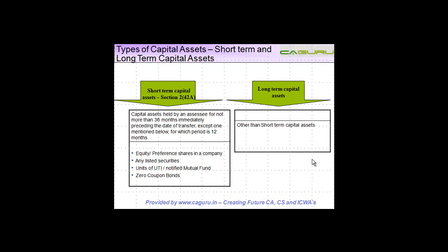Let's understand the types of capital assets. Capital assets are basically classified into two categories: short-term capital assets and long-term capital assets. The reason why these assets are classified into short-term and long-term is that the rates of taxes